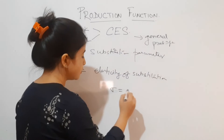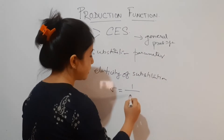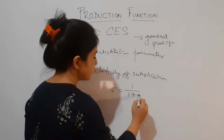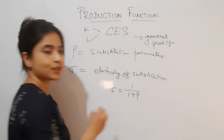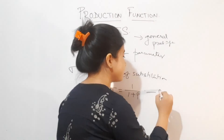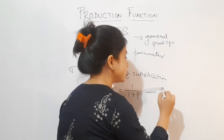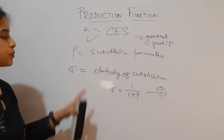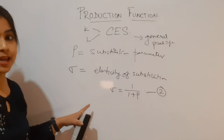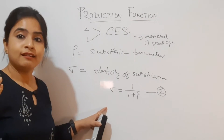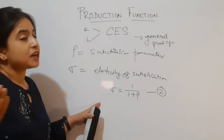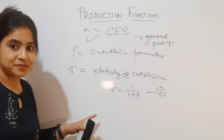The elasticity of substitution sigma is given by: sigma = 1 / (1 + rho). This is a very important relation for the CES production function as well as in production function theory.